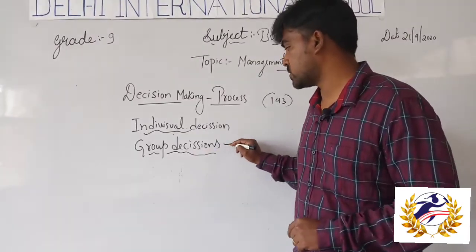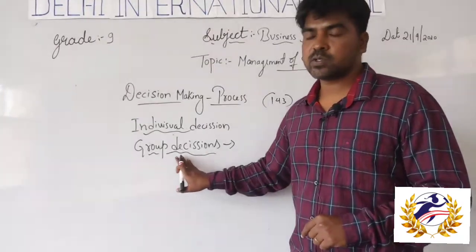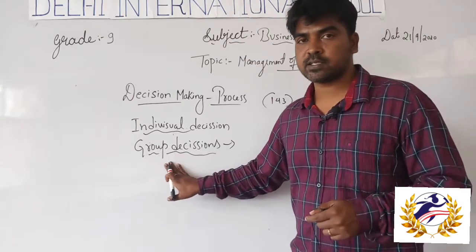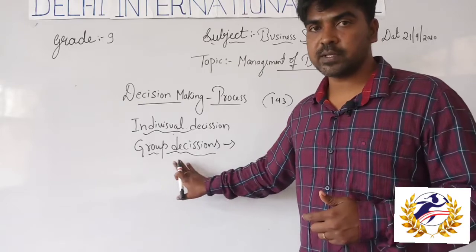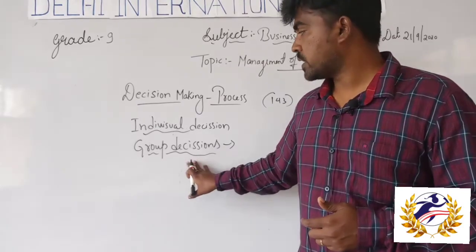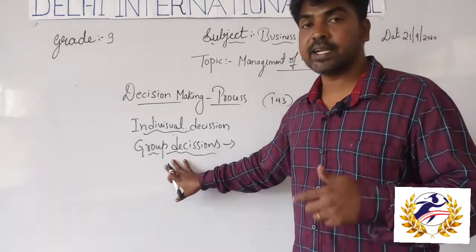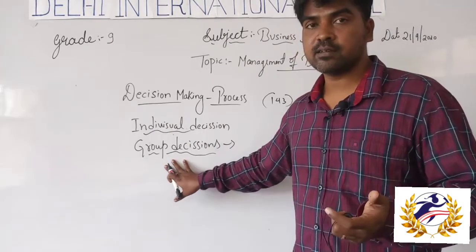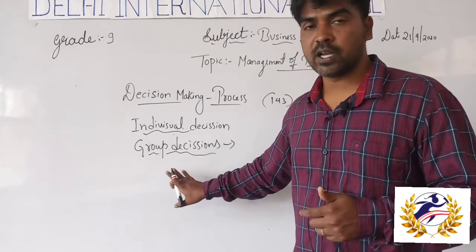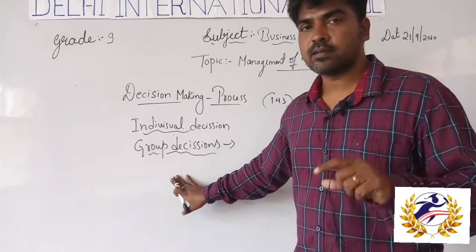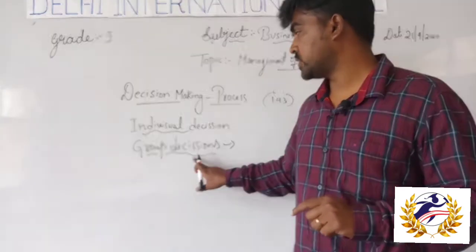In group decisions, many business partners or a group of people run the business together. Here they cannot take individual decisions — they should sit together, discuss, and then conclude, waiting for the final decision. That is called a group decision.